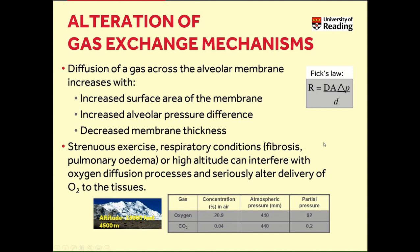In lung fibrosis, because the thickening of lung tissue is increased, the alveolar wall thickness is also increased. Because of that, there is a decrease in the diffusion capacity of the lung. This also happens during emphysema, where destruction of alveoli reduces the area for gas exchange, again impacting on the ability of gases to diffuse.